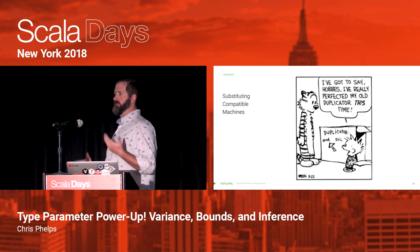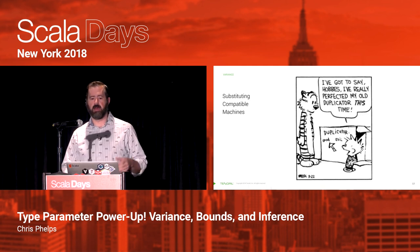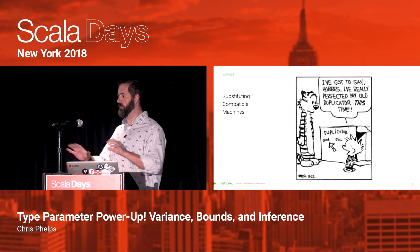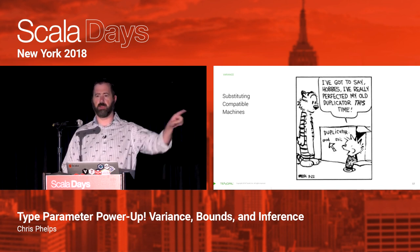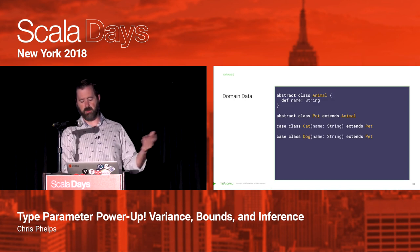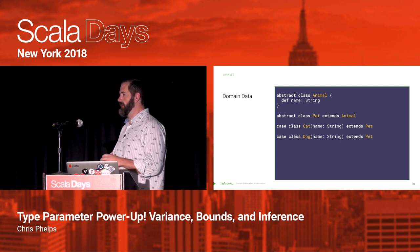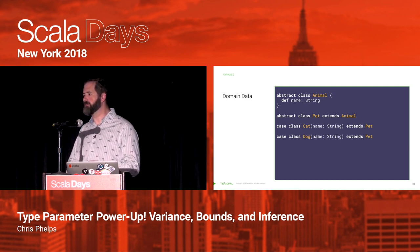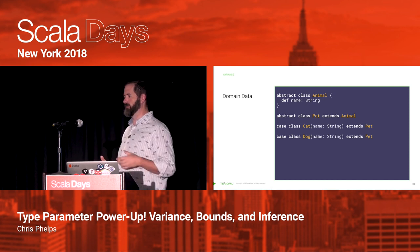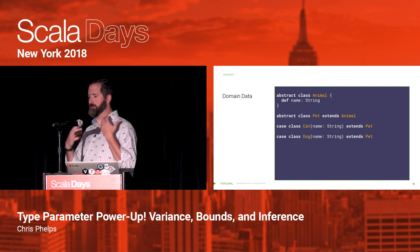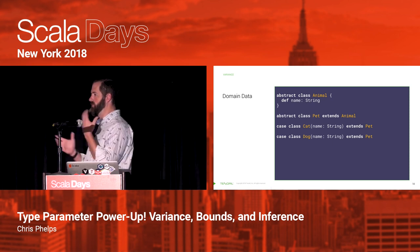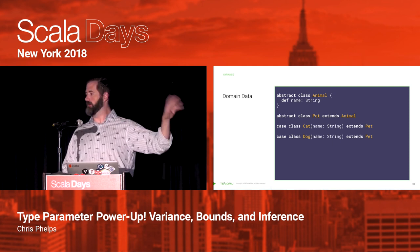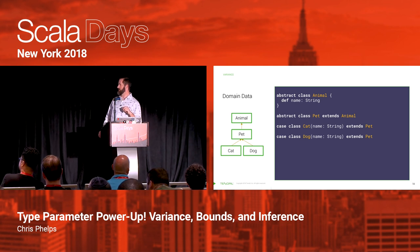Think about this like substituting in different machines — Hobbs wants a machine that he can push to do a thing, and he doesn't care if Calvin gives him a new and improved duplicator. When can we substitute which kinds of machines? A lot of documentation uses pets and animals in examples. I don't think it's particularly compelling, but it's very natural to understand, so I'm going to continue to use that pattern. We've got an animal base class, pets are types of animals, and cats and dogs are types of pets.